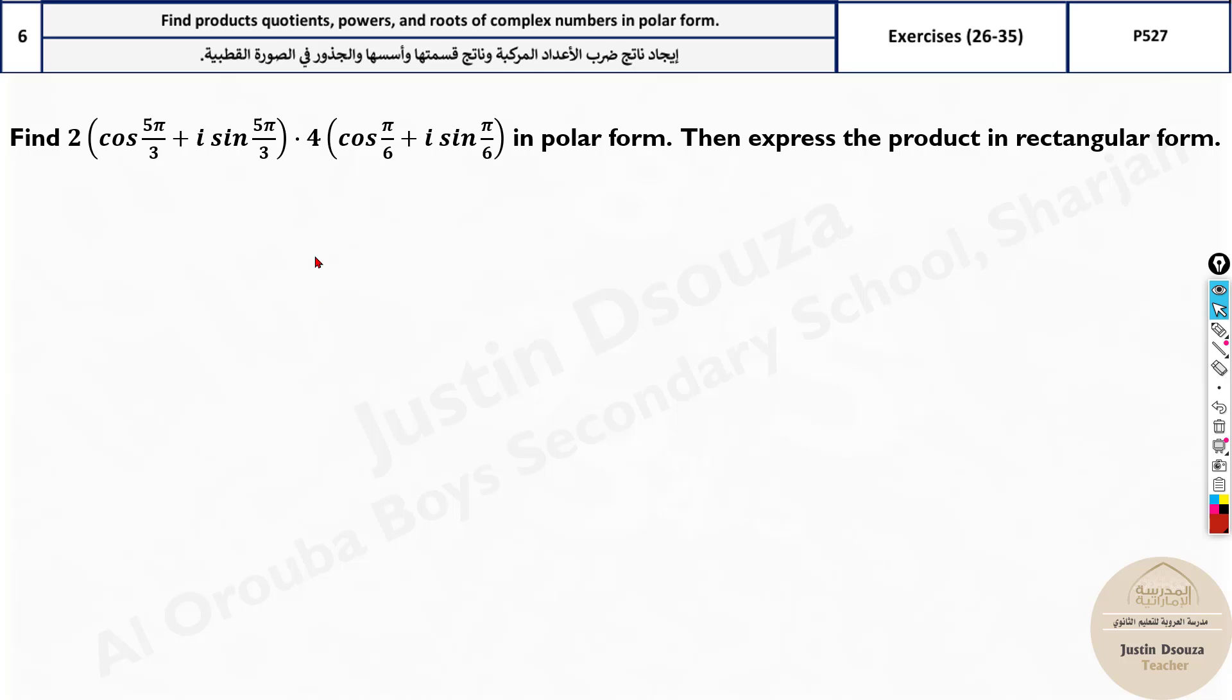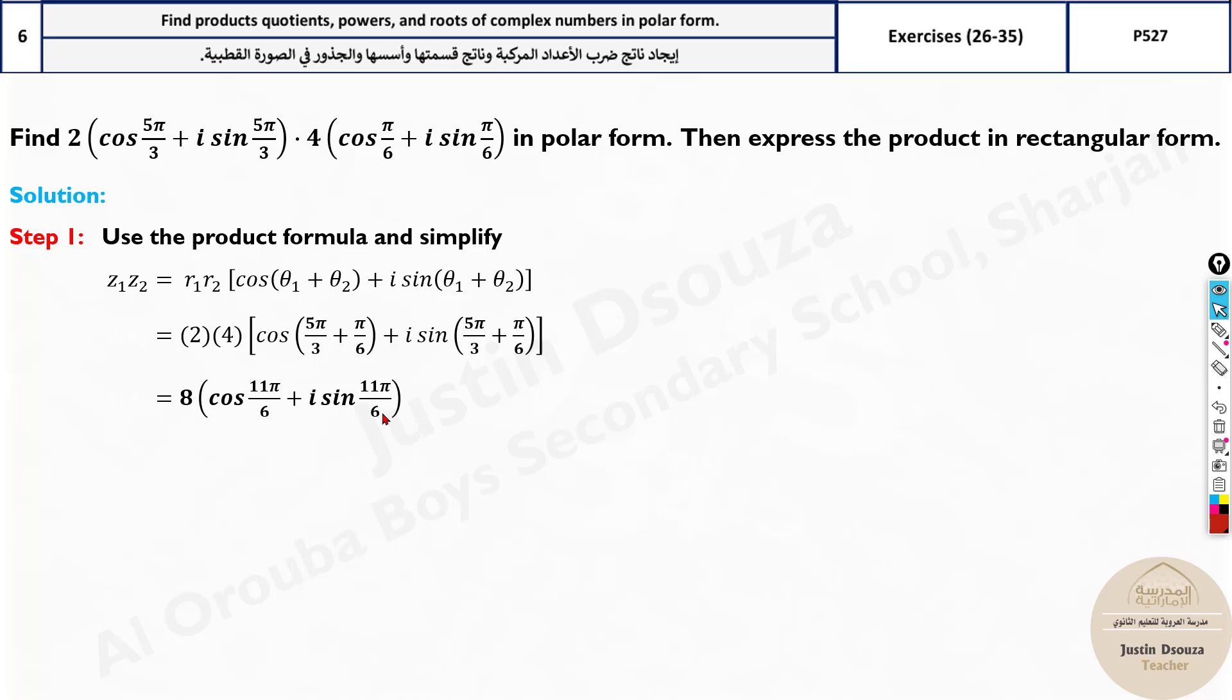Now let's solve some problems. Here we have a problem where we need to find the product in the rectangular form. So we need to find the product, that is multiply them. Should remember the formula. Over here is the formula. All you do is multiply 2 times 4 here. And what about theta? Add them up. 5 pi by 3 plus pi by 6. Same thing over here with the imaginary part. Put it in the calculator. You get this as the answer.